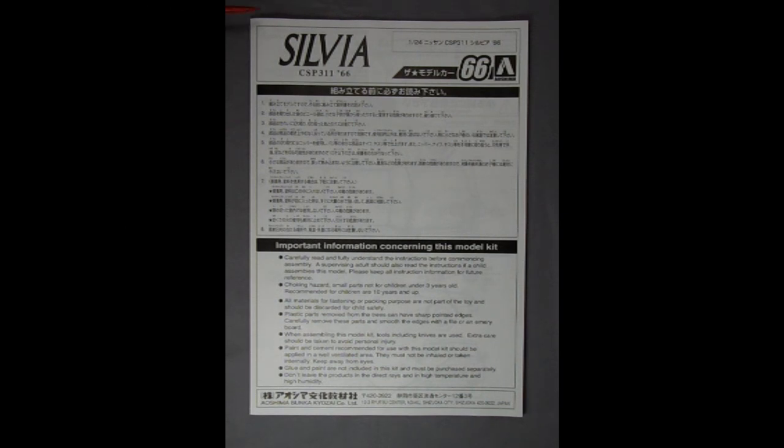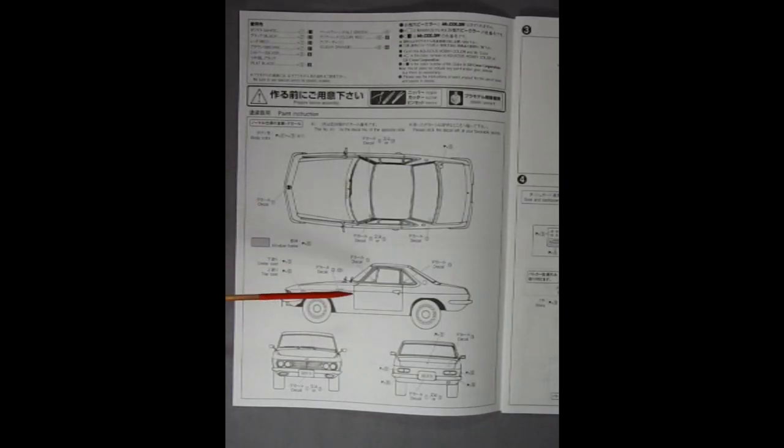Here we have the front page for our Silvia instruction sheet and it is quite a big one so I've had to rotate the camera around. Here we have the important information concerning this model kit, read the instructions and all that kind of thing. Here we have the schematic view of our entire car and there are some call outs in here for the police package. This is your standard driving car and what we have is the top view as well as decal placements all along here for the little emblems, side view, front and back profiles.